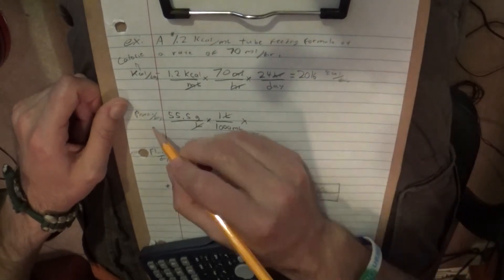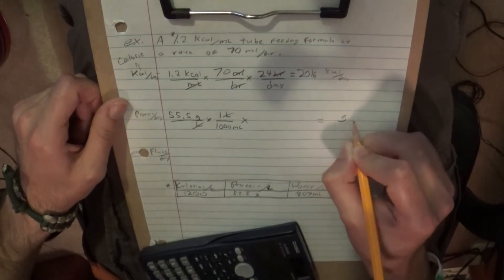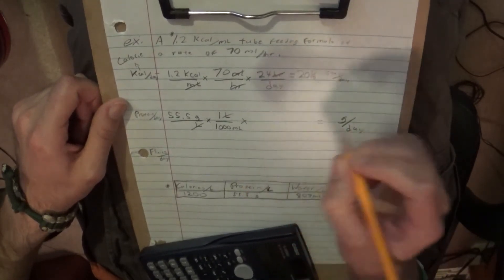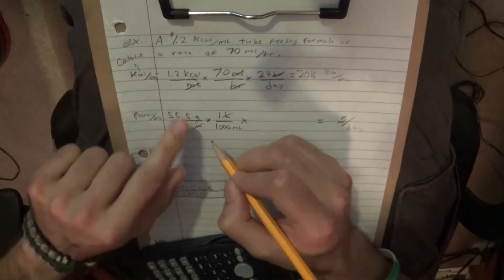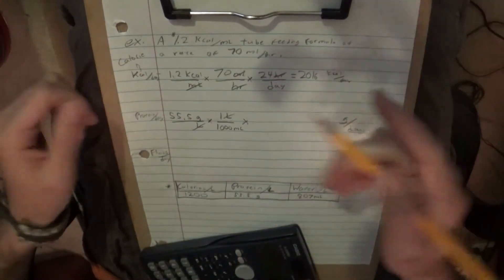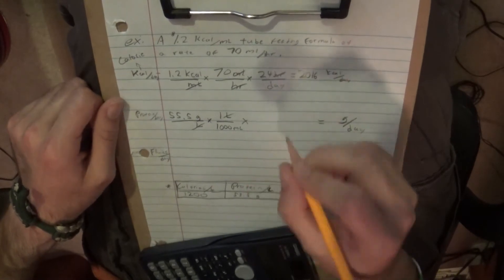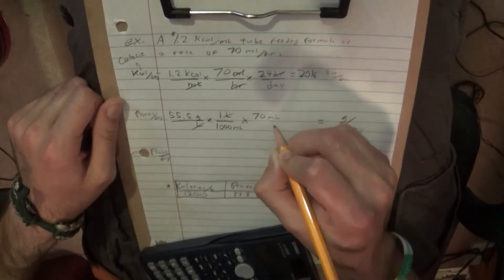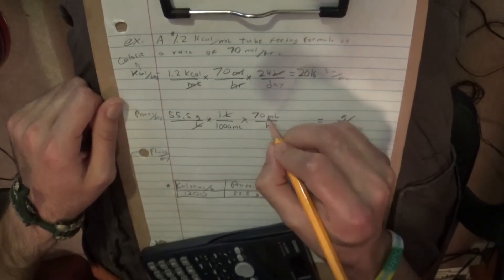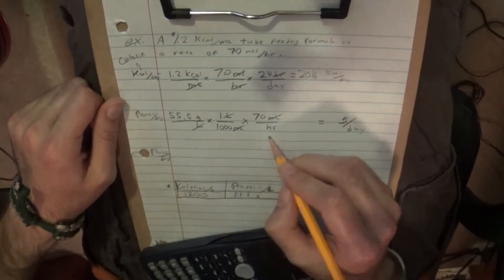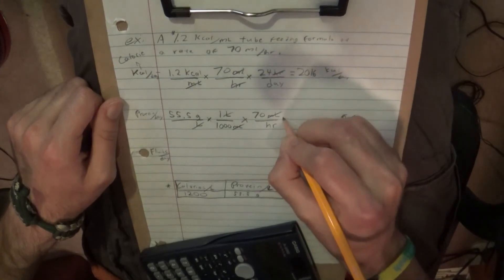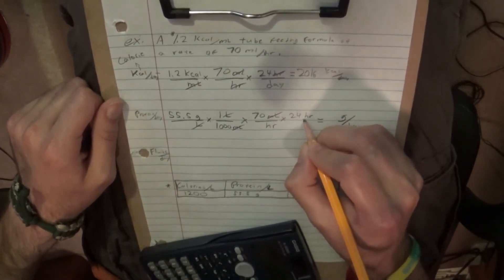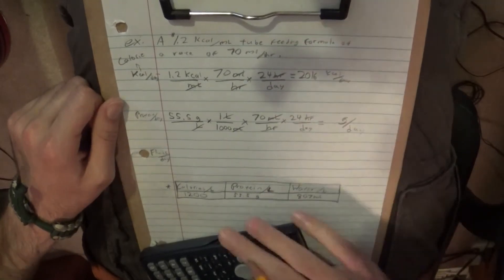Unfortunately, that's not the solution because we're looking for grams over day. So we've got to have day on the bottom. We have grams on the top, so we don't have anything that can cancel out grams. But we go back to our rate of 70 milliliters per hour, which cancels out the milliliters. Now we have grams per hour, which we go back to our old standby. How many hours are in a day? Bada bing, bada boom.